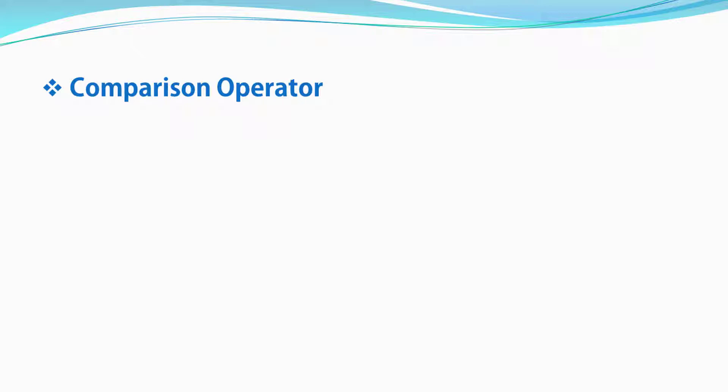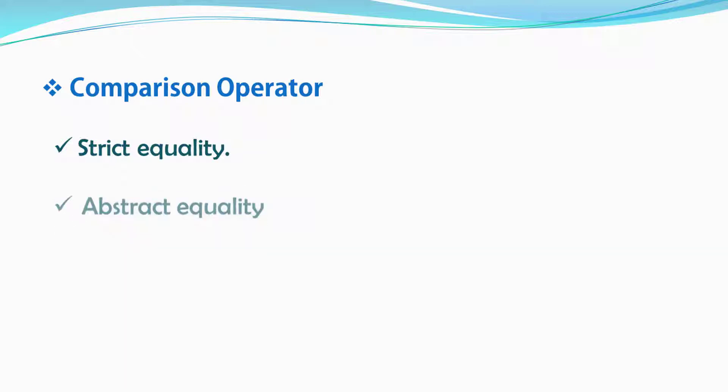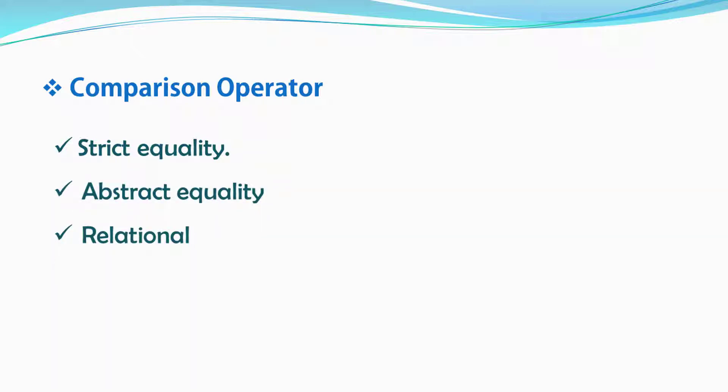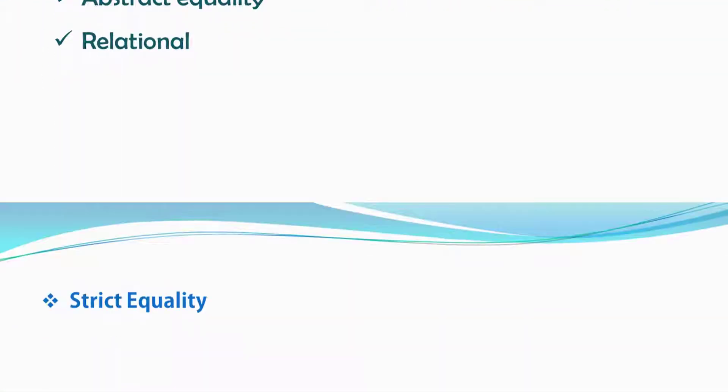There are three types of comparison operators: strict equality, abstract equality, and relational. We will start this tutorial from the strict equality and after that we will compare strict and abstract equality.